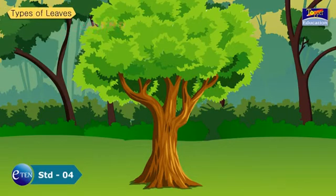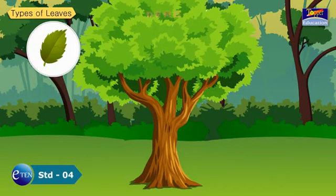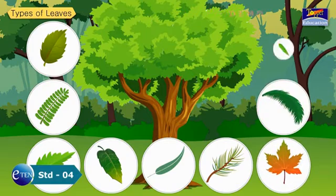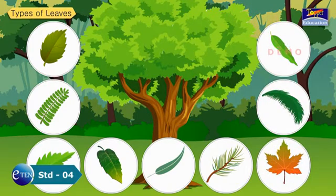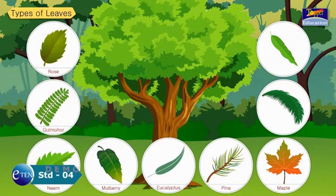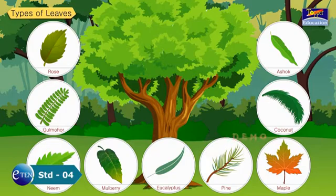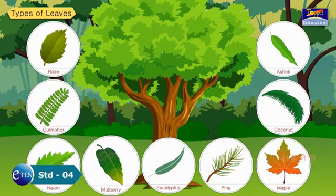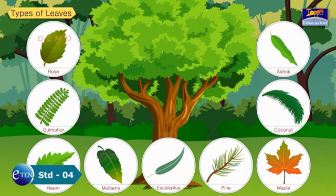Types of Leaves. We can identify a plant by the types of leaves it has. We can identify the rose plant, gulmohar plant, neem tree, mulberry, eucalyptus, pine tree, maple tree, coconut tree, and ashok tree by their distinct leaves. All these leaves have different shapes and sizes, and they all are green in color.